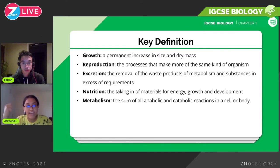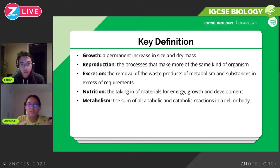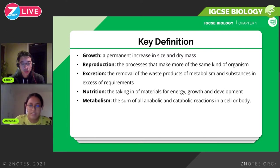Excretion is the removal of waste products of metabolism and substances in excess of requirements. Excretion happens in the form of urine and when you breathe out — you're removing carbon dioxide from your body, which is poisonous and can disturb the pH balance in your blood and cause disturbances in many processes. You don't need to know the details right now, as we'll look at most of these characteristics in detail later in the syllabus.